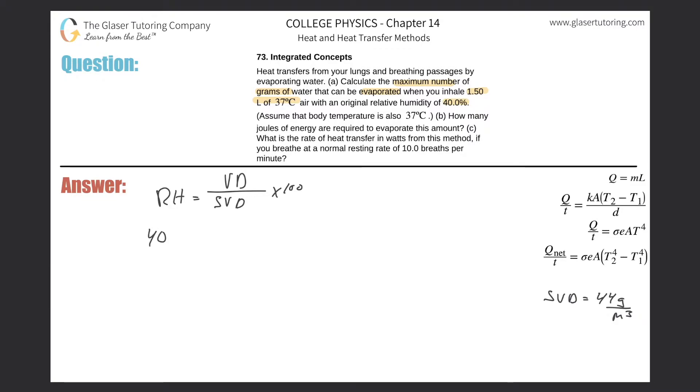So relative humidity is 40%. We can then calculate the actual amount of vapor density in the air because the saturation vapor density, those are constants for certain temperatures. And this 44 grams per cubic meter is a constant for 37 degrees Celsius. So this would tell me the vapor density. So let's do it. 40 times 44 divided by 100, it's about 17.6 grams per cubic meter.